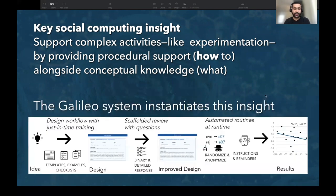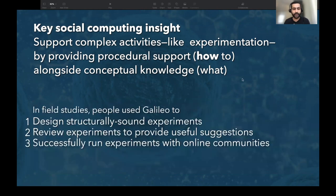The Galileo system takes this insight and bakes it into three roles: that of an experiment designer, a reviewer, and an experiment participant. In field studies, Galileo provided good usage data with people designing structurally sound experiments and running them with their communities.